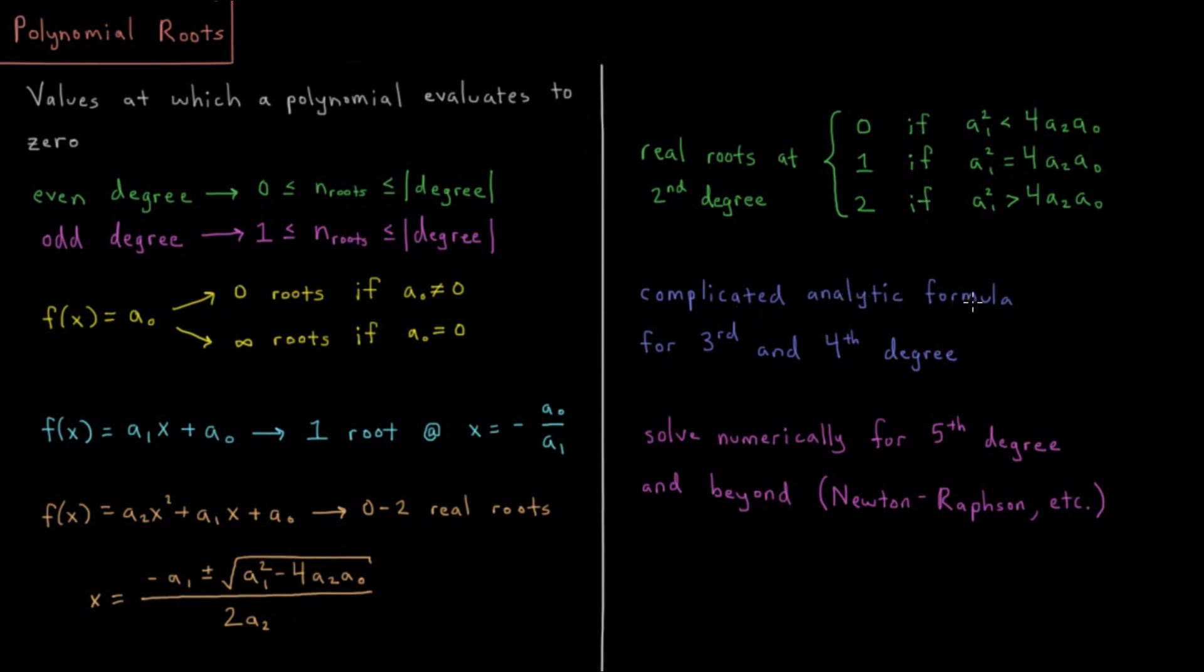There are analytic formulas for 3rd and 4th order, so analytic meaning there is some exact closed form. I can write it down on paper in terms of all the inputs like this. There are exact formulas for 3rd and 4th order polynomials, but they get much more complicated than these types of formulas.